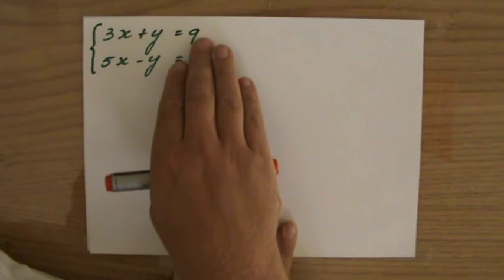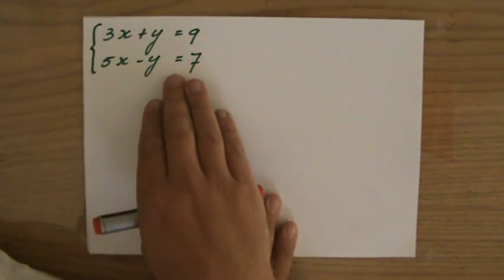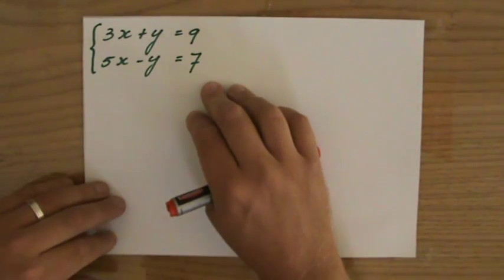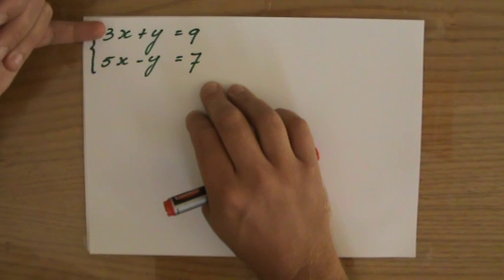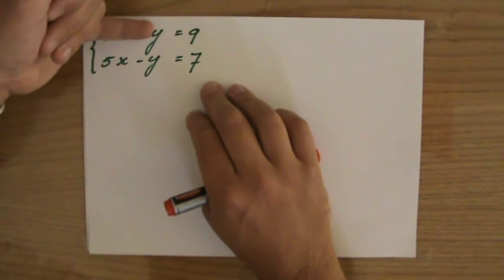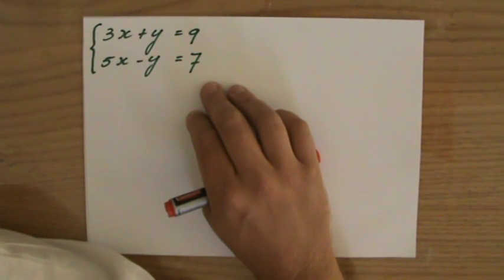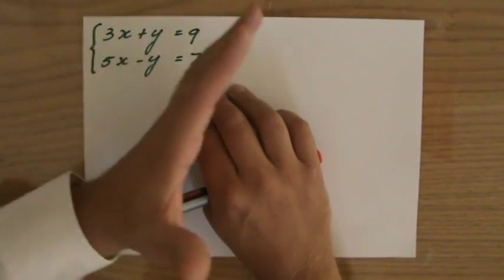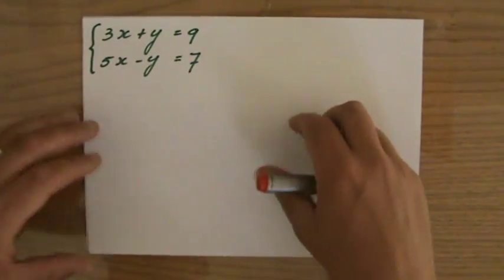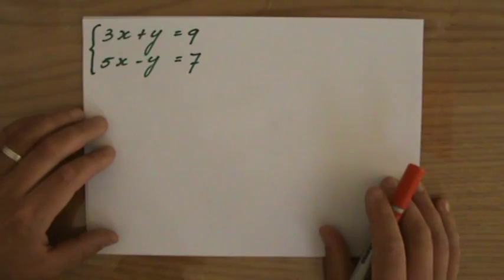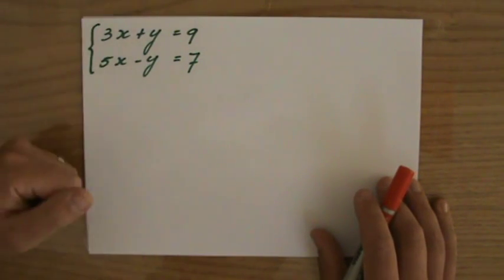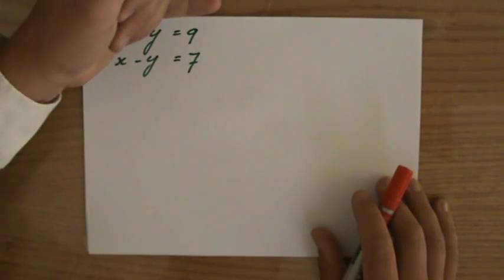Now I'm going to show you what you're supposed to do. 3x plus y equals 9. 5x minus y equals 7. So first of all, I make sure that I check that the x terms are on top of each other. The y terms and the constants, the numbers, are also nicely aligned. And in this case, that is already written like that. So I do not have to rearrange one of the equations. You've got to make sure that those x's are on top of each other, the y's and then the numbers.